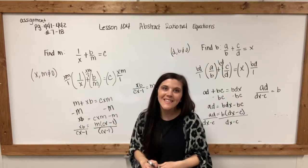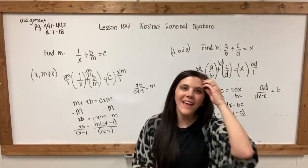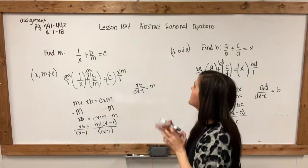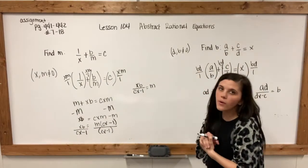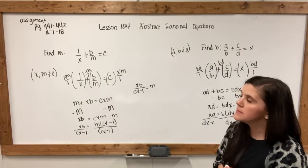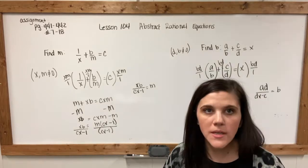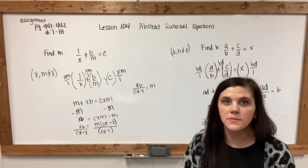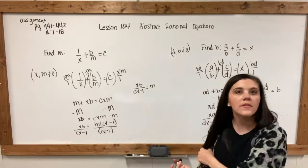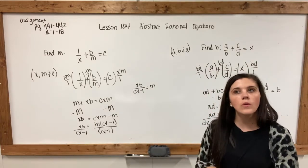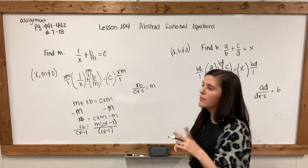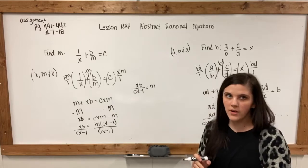Happy Wednesday, 8th grade. Today we are doing lesson 104, which is on abstract rational equations. These equations are just a little bit different because there are quite a few variables. There's not a whole lot of constants in them, and you are solving for one of the variables.